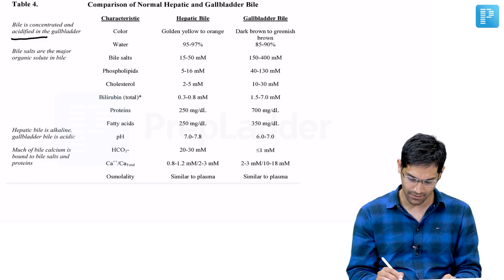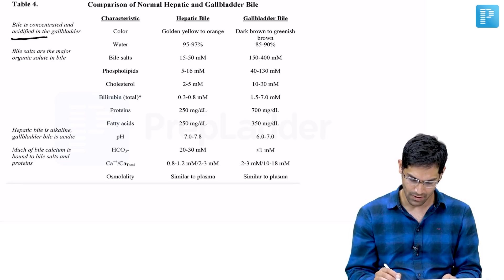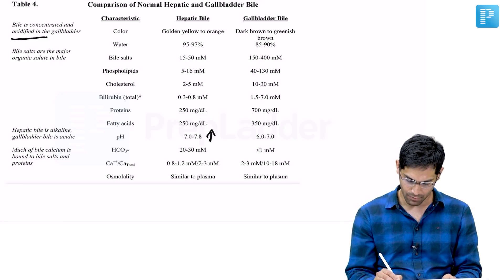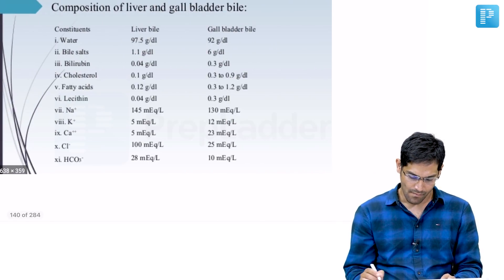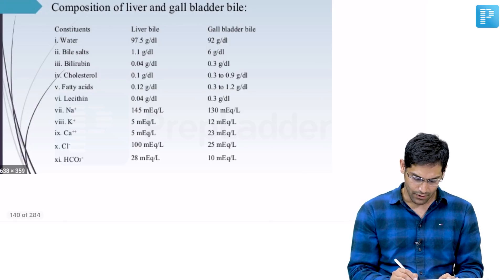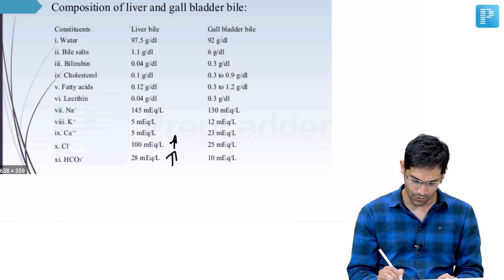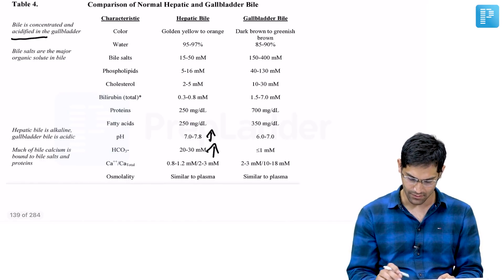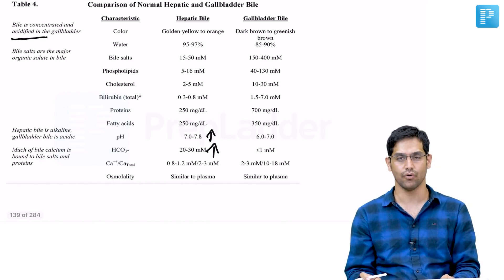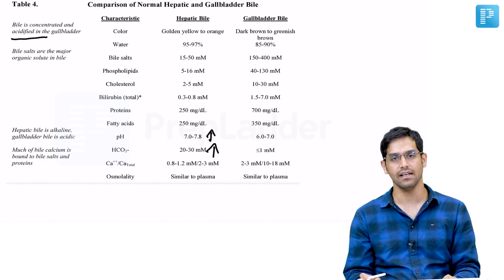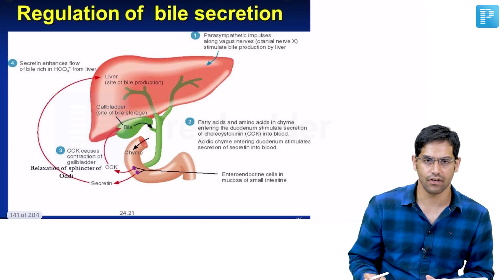pH is more in hepatic bile, bicarbonate is also more, and chloride is also more. Hepatic bile is alkaline and gallbladder bile is acidic.